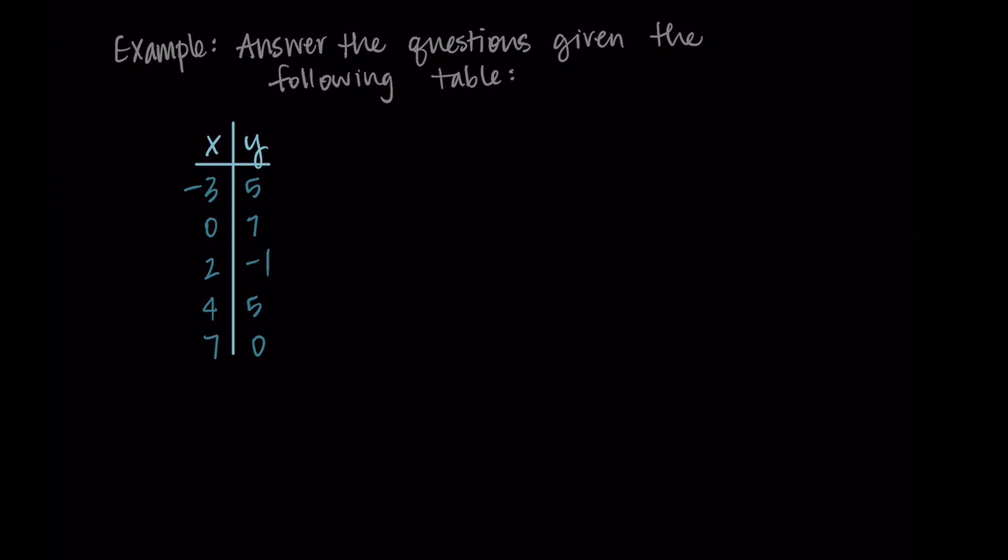So let's practice using this function notation. For this example, let's answer some questions using this table. So we have an x column and a y column, this is a relation. We have negative three five, zero seven, two negative one, four five, and seven zero. Then let's consider this table as a function, f of x equals y. So x is the input and y is the output. And let's find the following information.